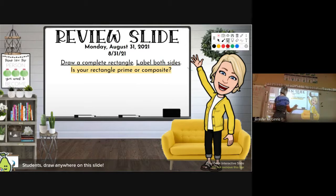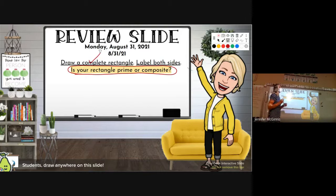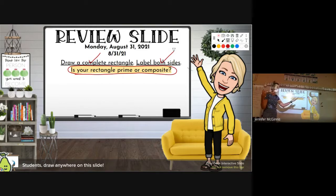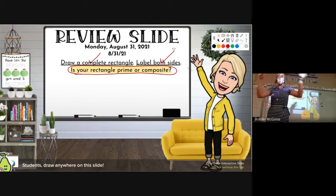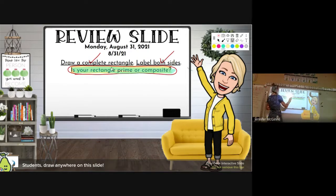Yesterday we took that a step further and we started talking about this concept of prime or composite. As I looked around at your cactus notebooks again, I saw everyone can draw a rectangle — everyone that participated. Everyone can label the sides. Today was the first day that I didn't make you draw it with a certain side length; you got to pick whatever you wanted. So what I want to work on today is this notion of: is your rectangle prime or composite?